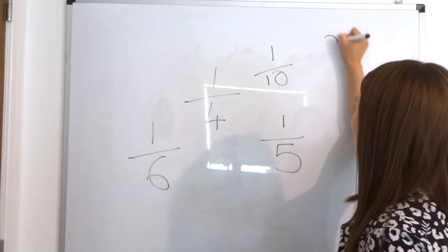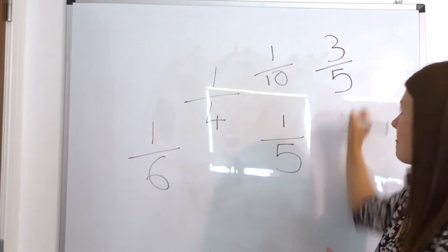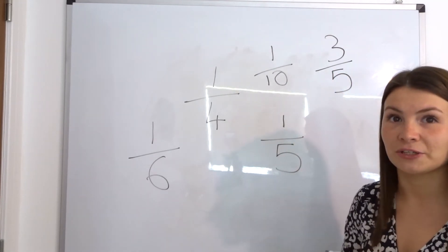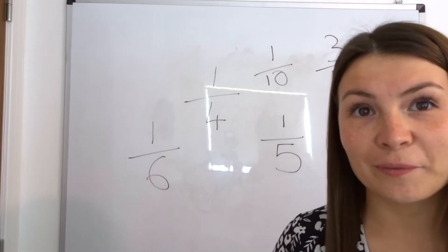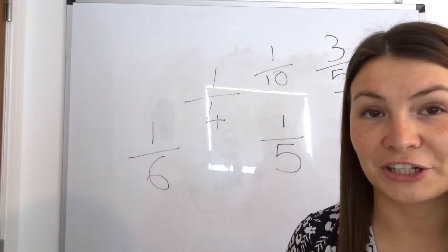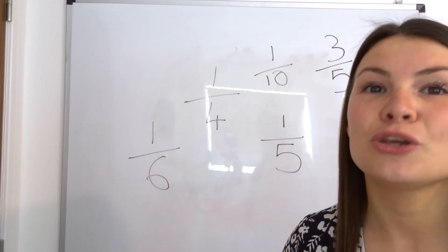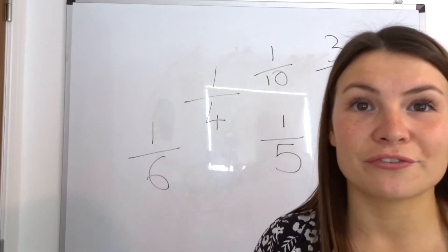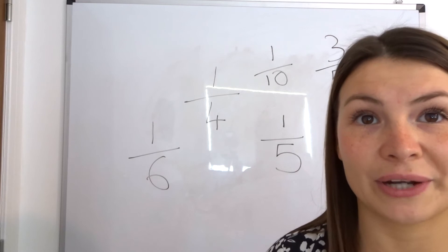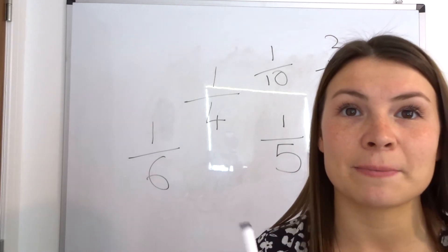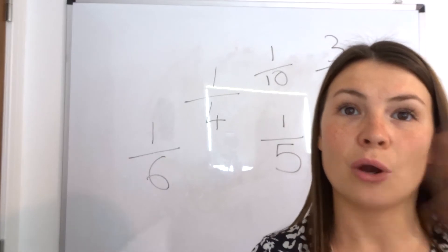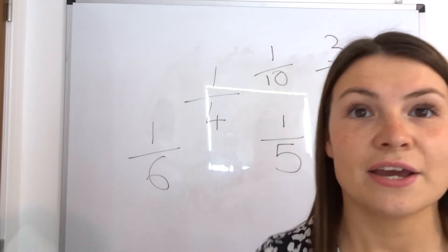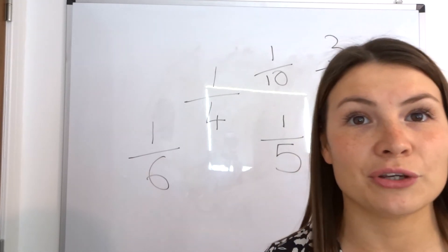A non-unit fraction is where the numerator - the number on the top - is more than one. For example, if we had three fifths, that would be a non-unit fraction. So if the number on the top is bigger than one it is a non-unit fraction; if the number on the top is one it is a unit fraction. I'm going to put some non-unit fractions and some unit fractions on the board - have a go ordering them on your piece of paper, splitting it in half with unit fractions on one side and non-unit fractions on the other.